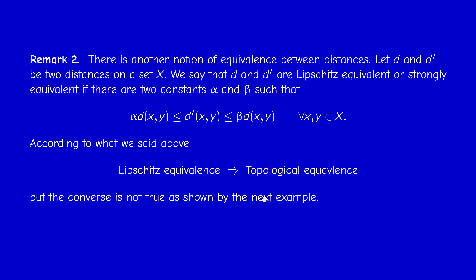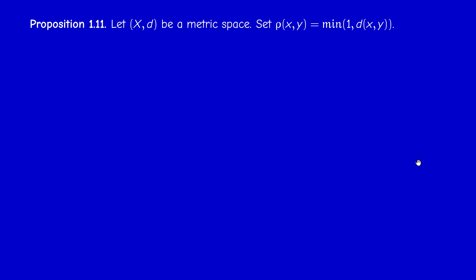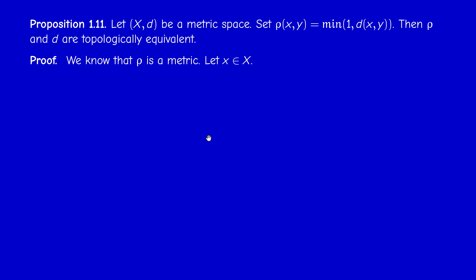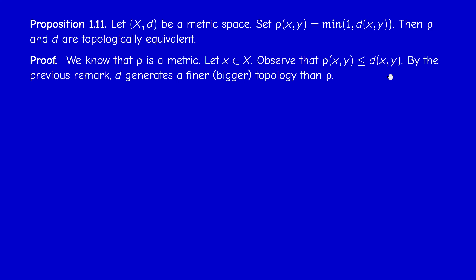Now we prove that the converse is not true with an example. Whenever we have a metric space (X, d), set ρ(x,y) = min(1, d(x,y)), which is known to be a distance. We claim that ρ and d are topologically equivalent. First, since ρ = min(1,d) ≤ d, we are in the good case with k = 1 and can directly conclude that T_ρ ⊆ T_d — meaning d generates a finer or bigger topology than ρ.